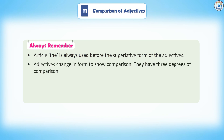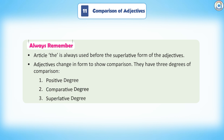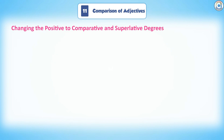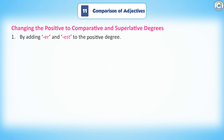Adjectives change in form to show comparison. They have three degrees of comparison: 1. Positive degree, 2. Comparative degree, 3. Superlative degree. Changing the positive to comparative and superlative degrees.